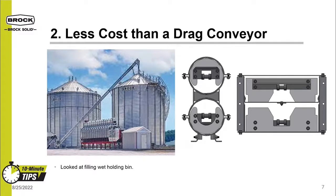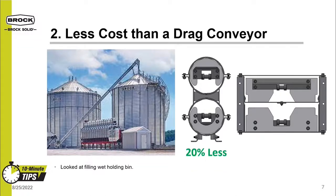The second reason to switch to a tube conveyor is that they cost less than a drag conveyor. For this comparison, we will look at the scenario of a tube conveyor filling a wet holding bin. Both a tall flight drag conveyor and a tube conveyor can be used in this scenario. In this scenario, the tube conveyor is 20% less than a tall flight drag conveyor.